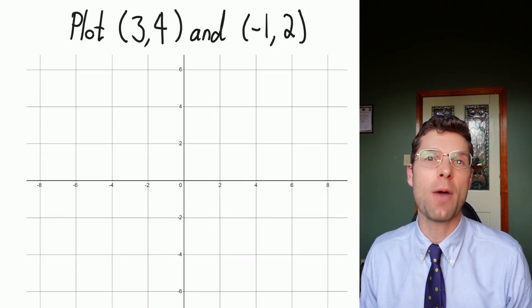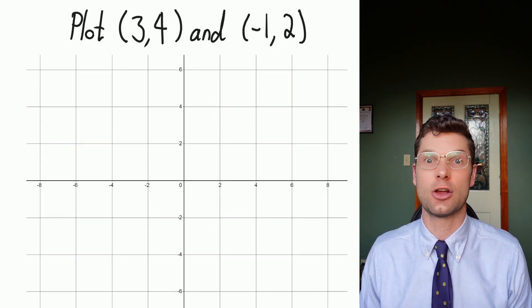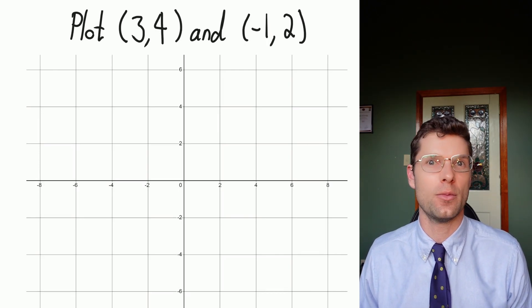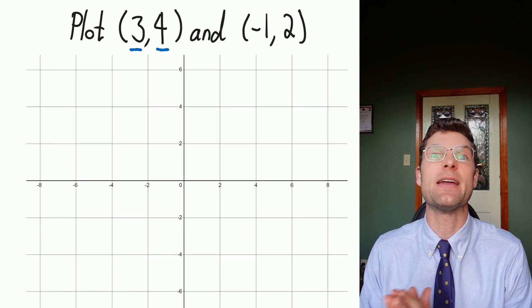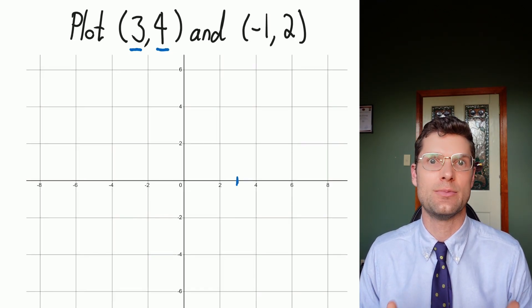Just as a really quick recap, we might be asked to plot the points (3, 4) and (-1, 2). If we're gonna plot (3, 4) first, the 3 comes first, so that means we're going to the side three positions.